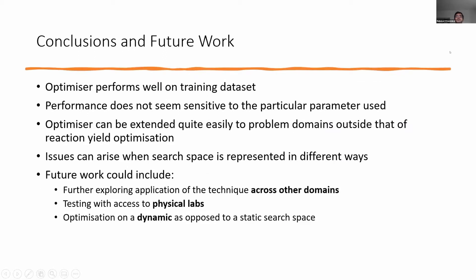Overall, the optimizer performs well on the original paper's datasets and on other reaction optimization problems. Varying batch size, acquisition function, or experimental budget doesn't significantly affect performance. There are issues when gaps exist in the domain, but apart from that the optimizer generalizes well — even to quite different domains like finding a molecule that best converts solar energy to electricity versus finding reaction conditions for the best yield, and the same optimizer works well on both.